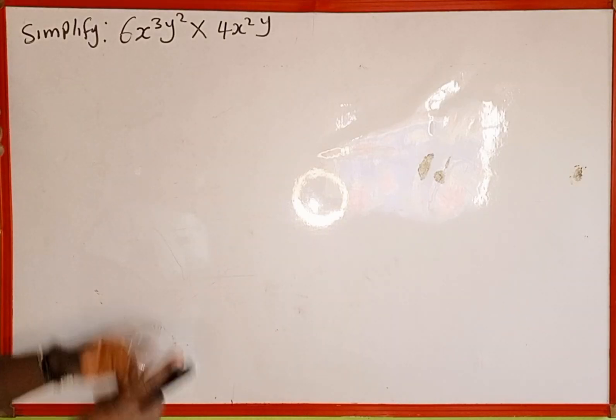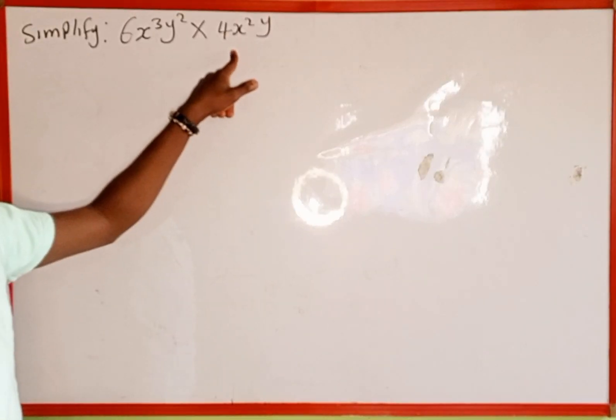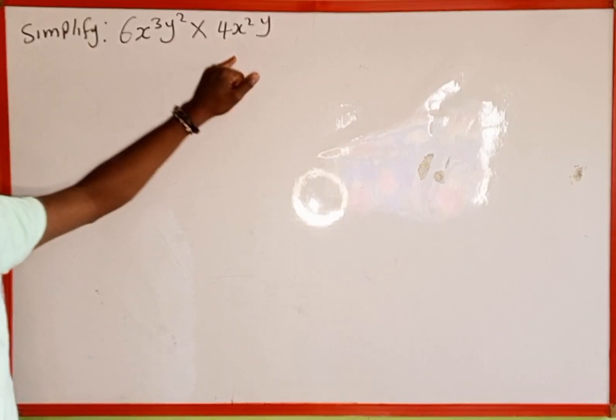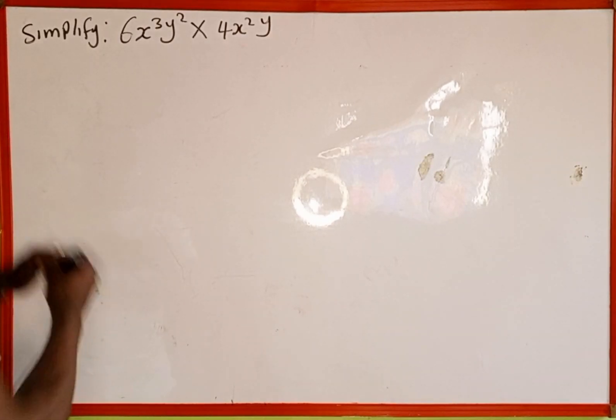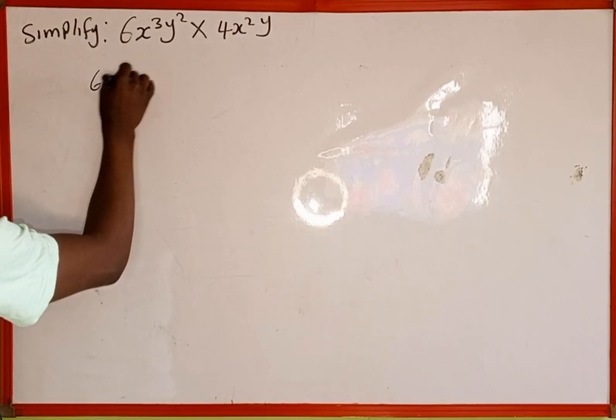The first thing we're going to do is multiply the constants. We have 6 here and 4, so we first multiply the constants: 6 × 4.